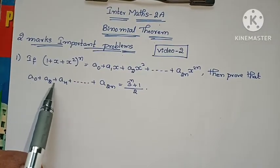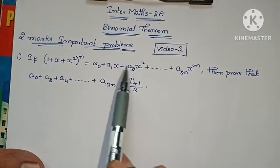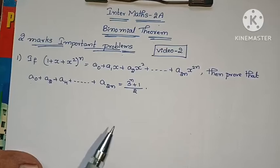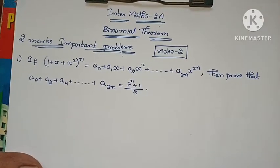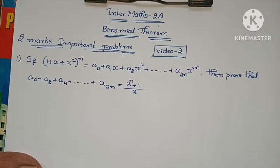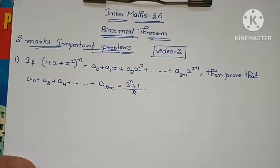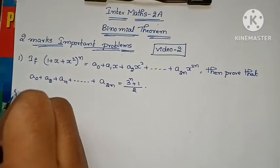We need a₀ + a₂ + a₄ and so on — all even-indexed terms. The odd terms like a₁, a₃ will not appear. We use x = 1 and x = −1 as substitution values.